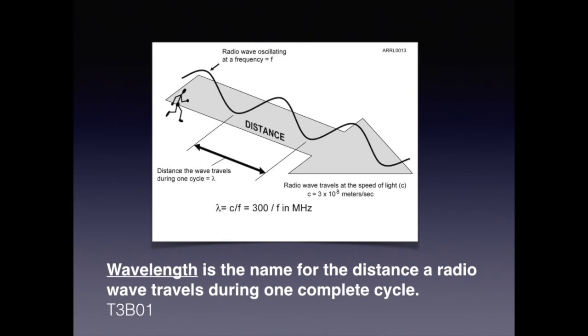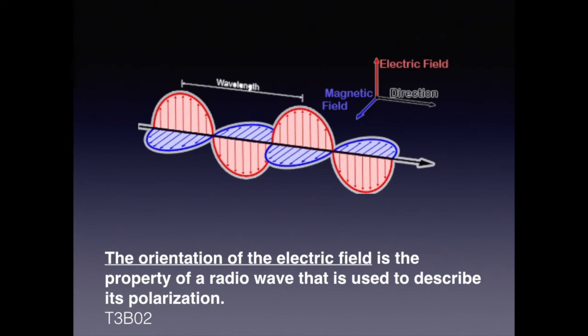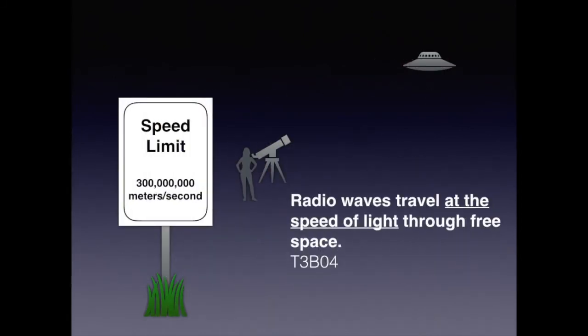To calculate the wavelength, we just need to know the frequency. The lambda symbol is used in the formula where lambda, or wavelength, equals 300 divided by frequency in megahertz. For the technician license exam, wavelength is the name for the distance a radio wave travels during one complete cycle. The orientation of an electric field is the property of a radio wave used to describe its polarization. Because light and radio waves are both in the electromagnetic spectrum, they travel at the same speed, which is 300 kilometers per second.